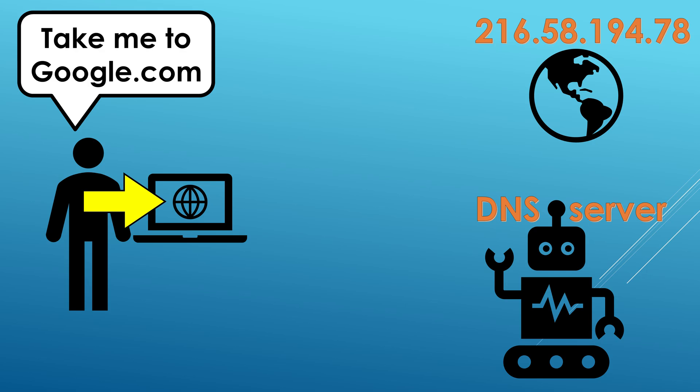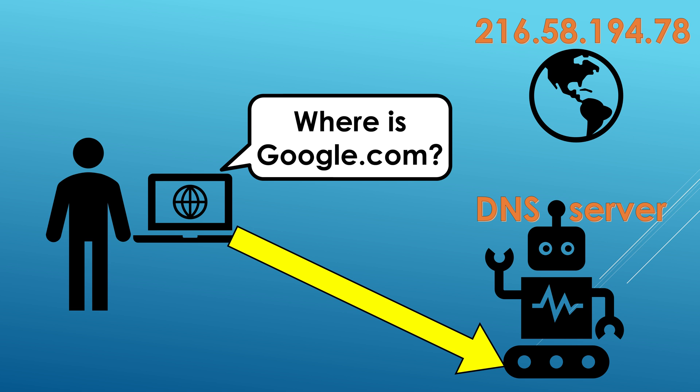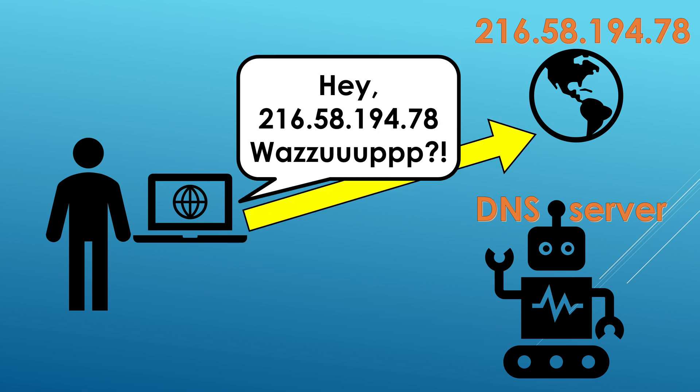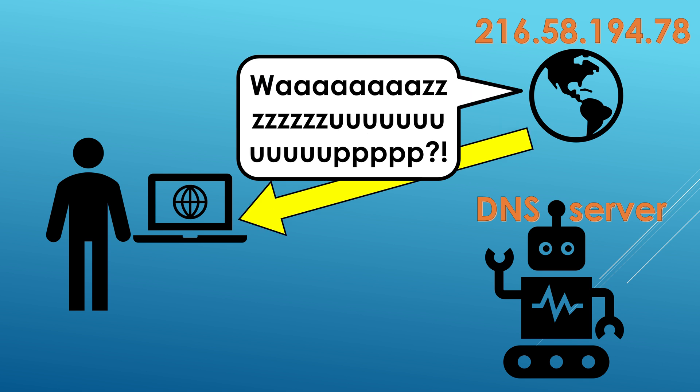Basically, computers don't talk to each other in terms of google.com — they use IP addresses. If we pretended computers could talk, this is how a conversation of looking up a website would go. 'Where is google.com?' 'Google.com is located at 216.58.194.78.' 'Hey friend, what's up?' 'Hi.'